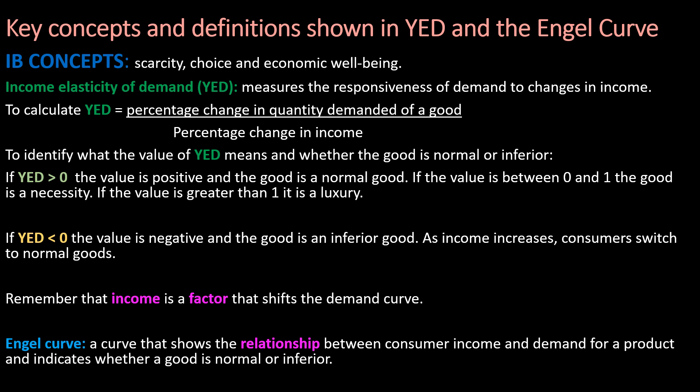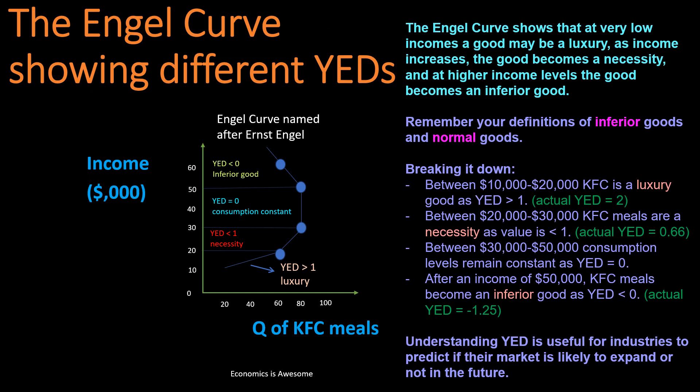Remember that income is a factor that shifts the demand curve. The Engel curve is a curve that shows the relationship between consumer income and demand for a product, and indicates whether a good is normal or inferior. It may have a different shape for different goods.